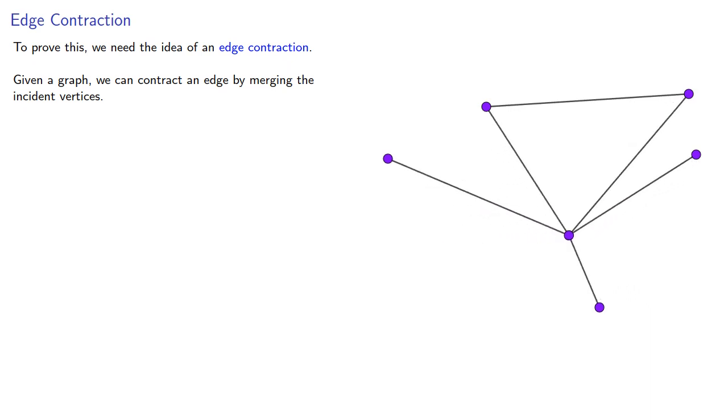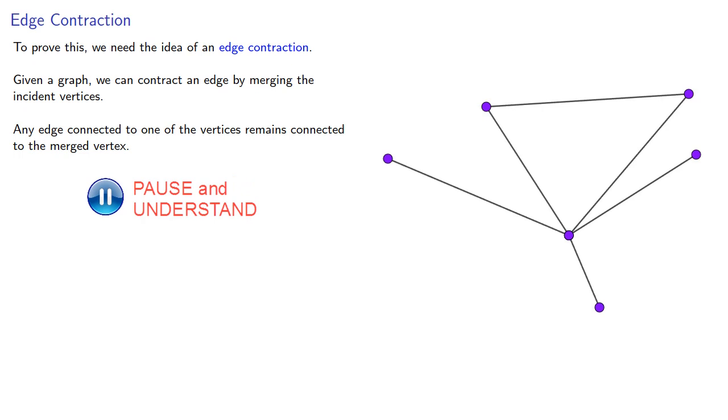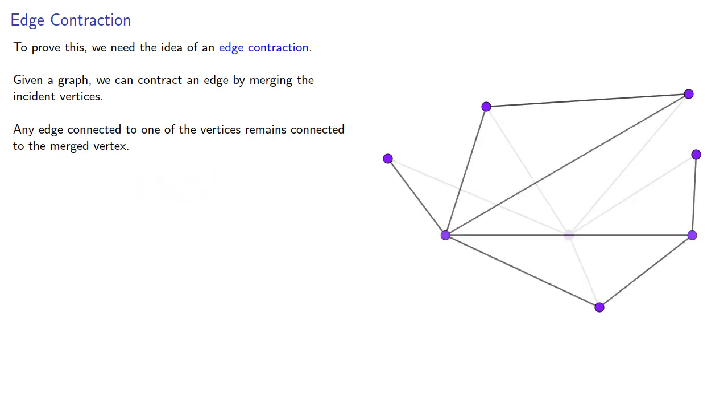Any edge connected to one of the vertices remains connected to the merged vertex. This might also cause us to merge edges as well.